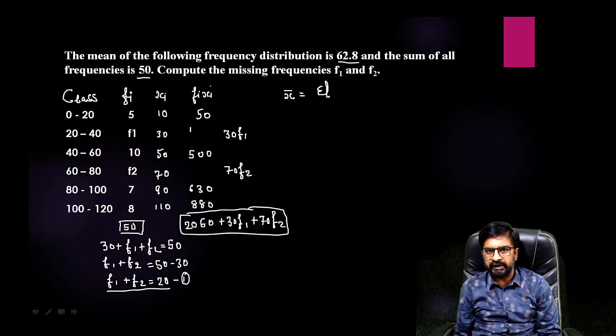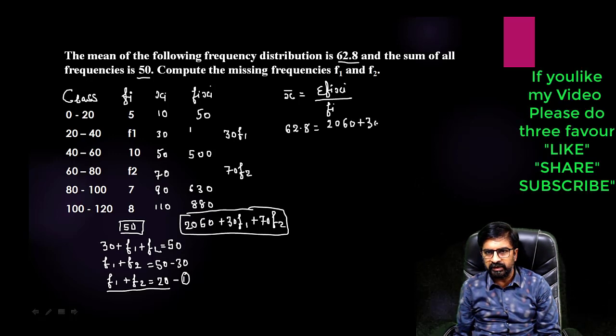So we are going to keep everything we are having in this one. So we will get second equation for finding two missing frequencies. Let me put mean 62.8, sum of fi xi that is 2060 plus 30 f1 plus 70 f2, divided by fi, just directly 50.